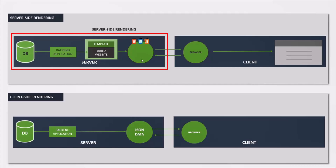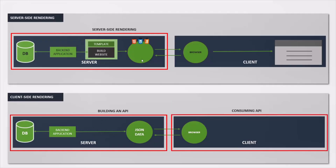Each time a client makes a request to this web API, it will fetch data from the database and send it back to the client. In that sense, both server-side rendered and client-side rendered websites are similar. But the big difference is that in case of a client-side rendered website, we are only sending the data fetched from the database in the response — we are not sending any HTML. This data sent in the response is usually in JSON format. When we create a client-side rendered website, there are always two steps: building an API and consuming that API.